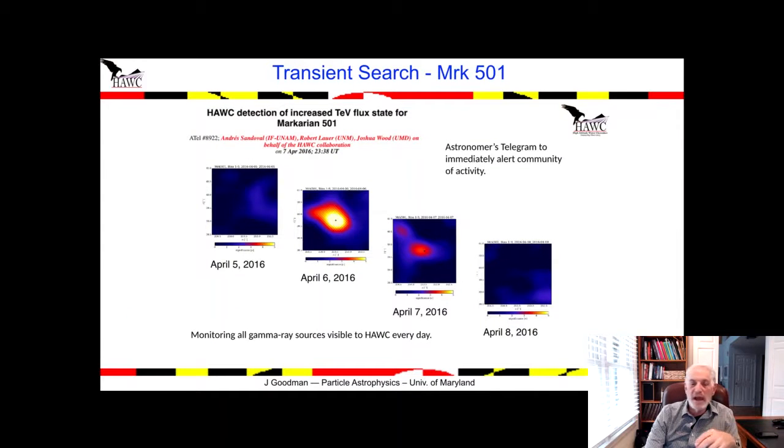We also look for transients when some of these active galaxies flare. Here's a picture of Markarian 501 flaring a couple years ago. HAWC notifies the rest of the community when this happens because we look every day, 24 hours a day at the whole sky.